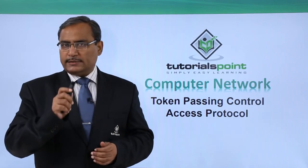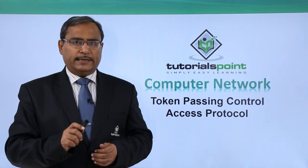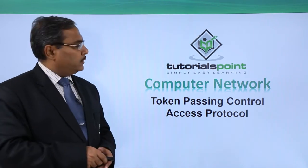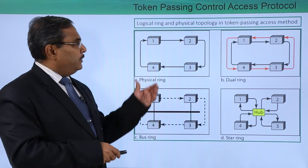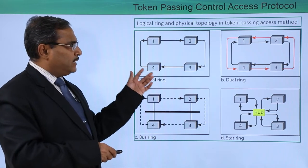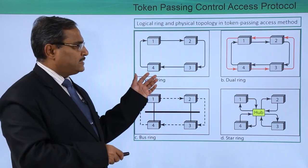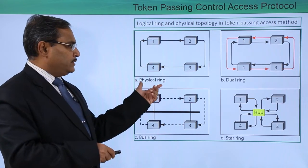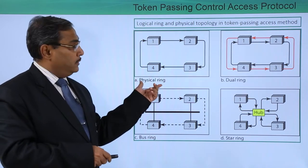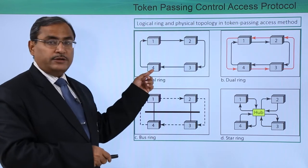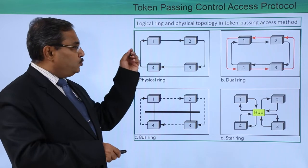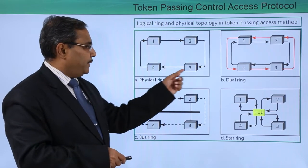In this video we are discussing token passing control access protocol. Here you see the logical ring and the physical topology in token passing access method. Here we are having the physical ring because this topology is known as the ring topology. The nodes are connected in the ring topology and the token will be flowing in this way.